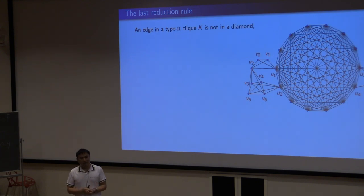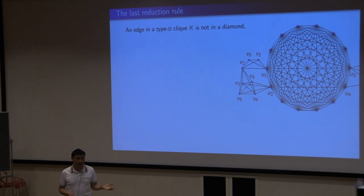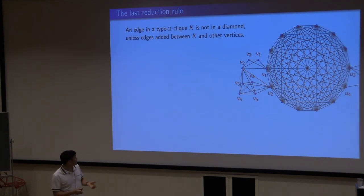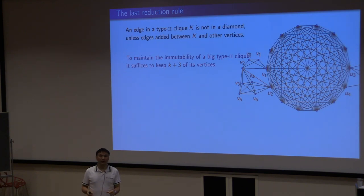From the example, we can see an edge in a type 2 clique was not in a diamond. That's the definition. Unless an edge is added. For example, V2U1 was not in any diamond, because that clique is a type 2. It's a good one. But, after you added this edge, there's a diamond containing V2U1. The point, the idea is, you want to maintain the status of protected. To do that for a big type 2 clique, you only need k plus 3 vertices. But how to find those? That's a little bit. We use some marking technique.